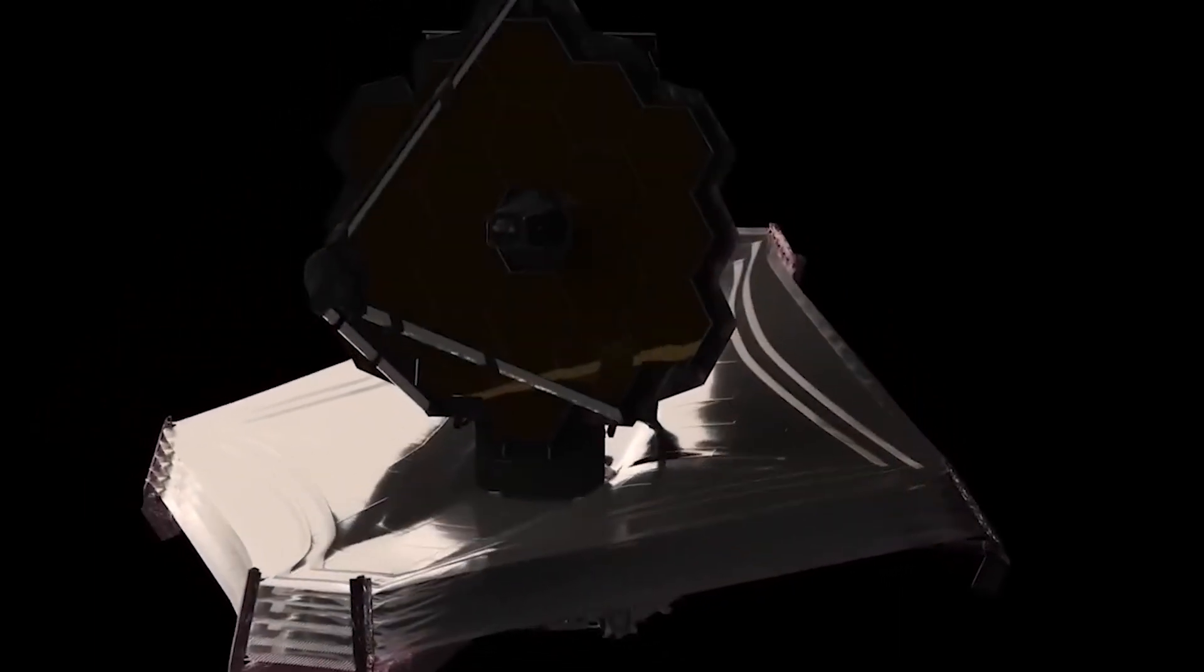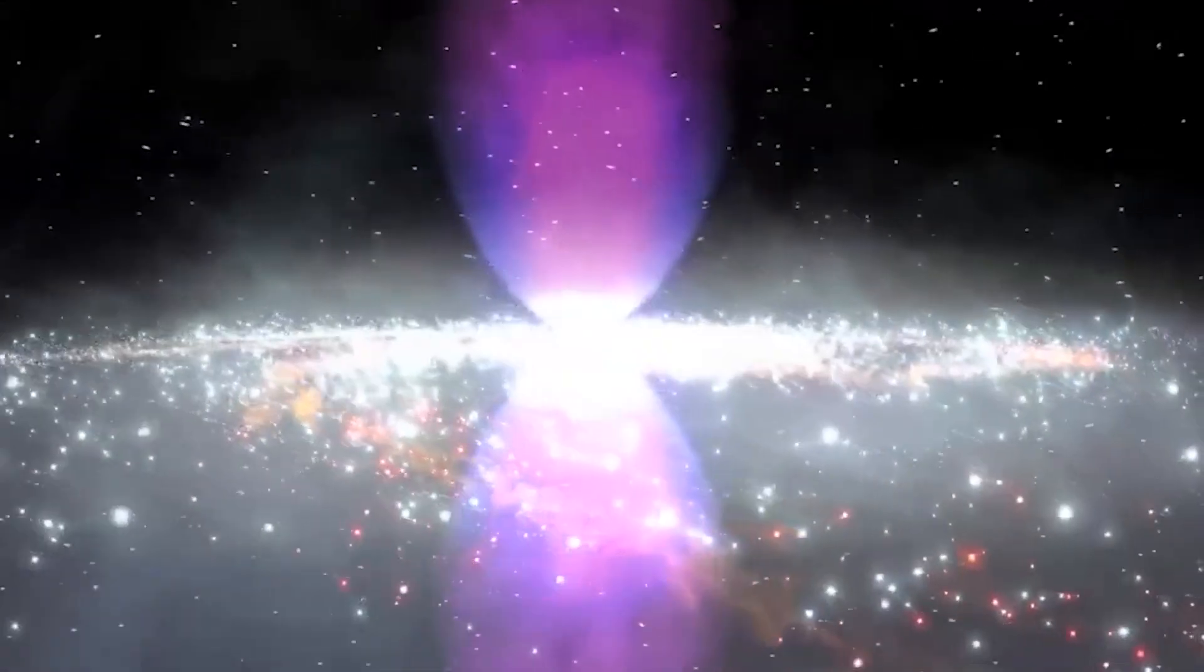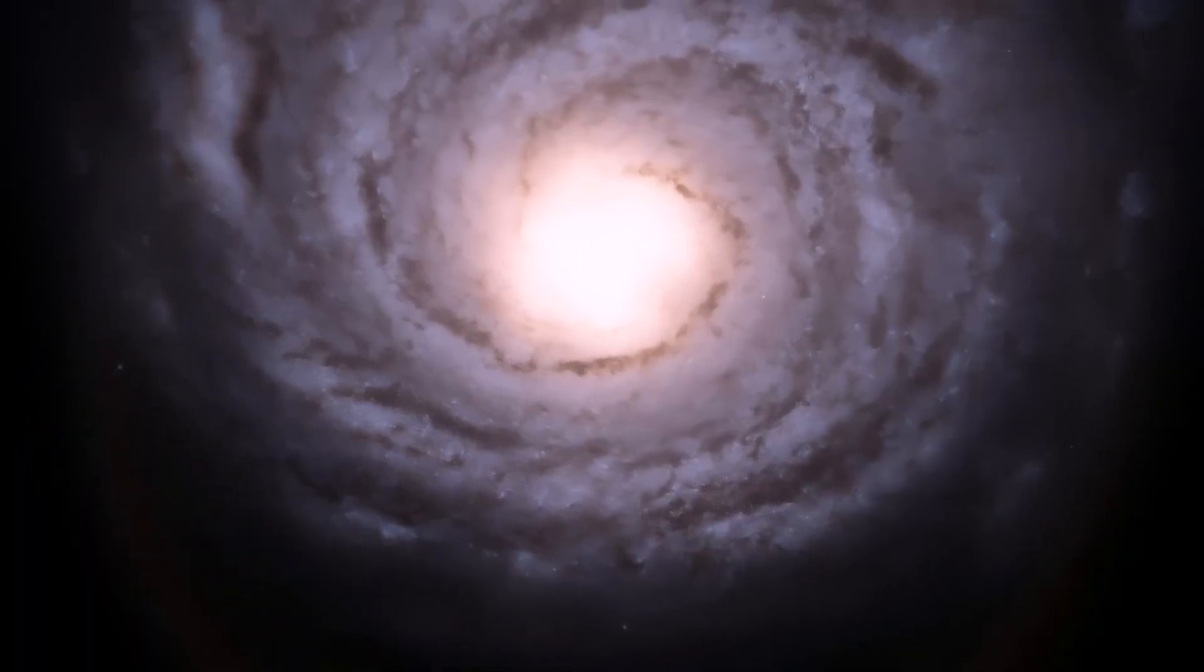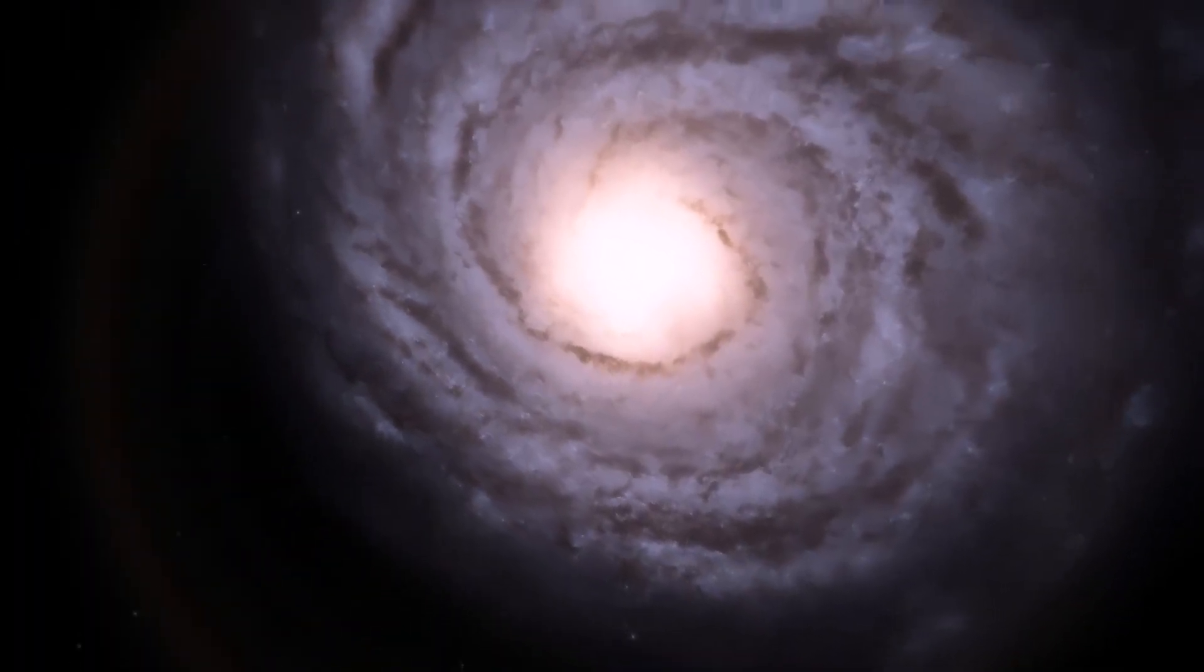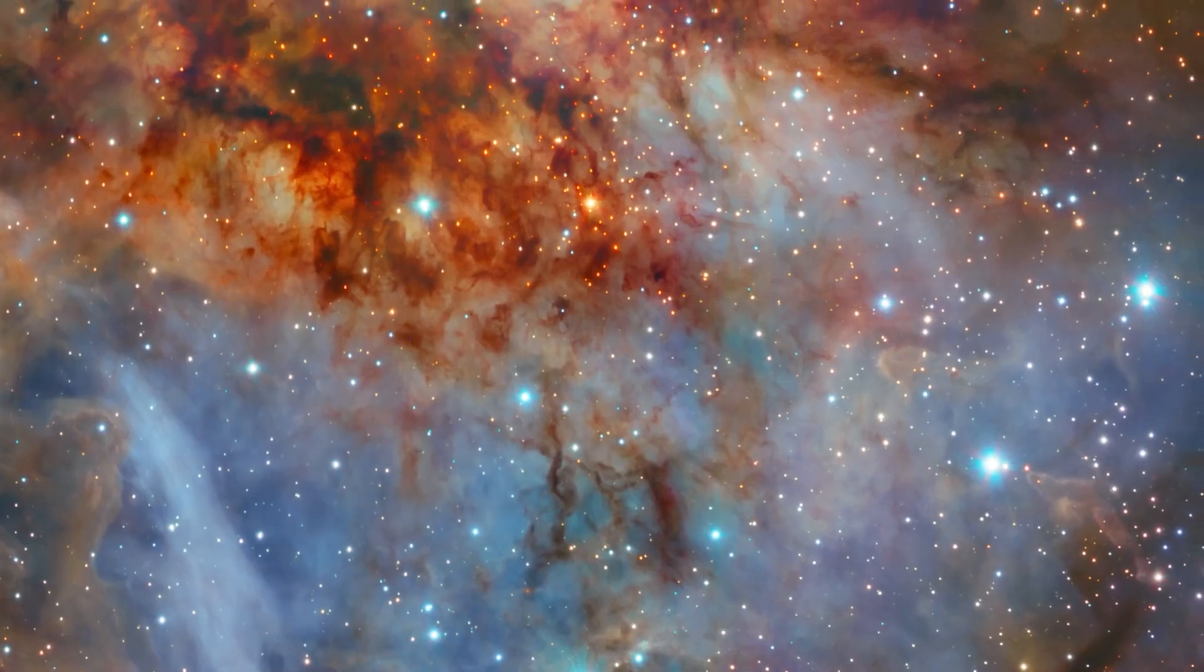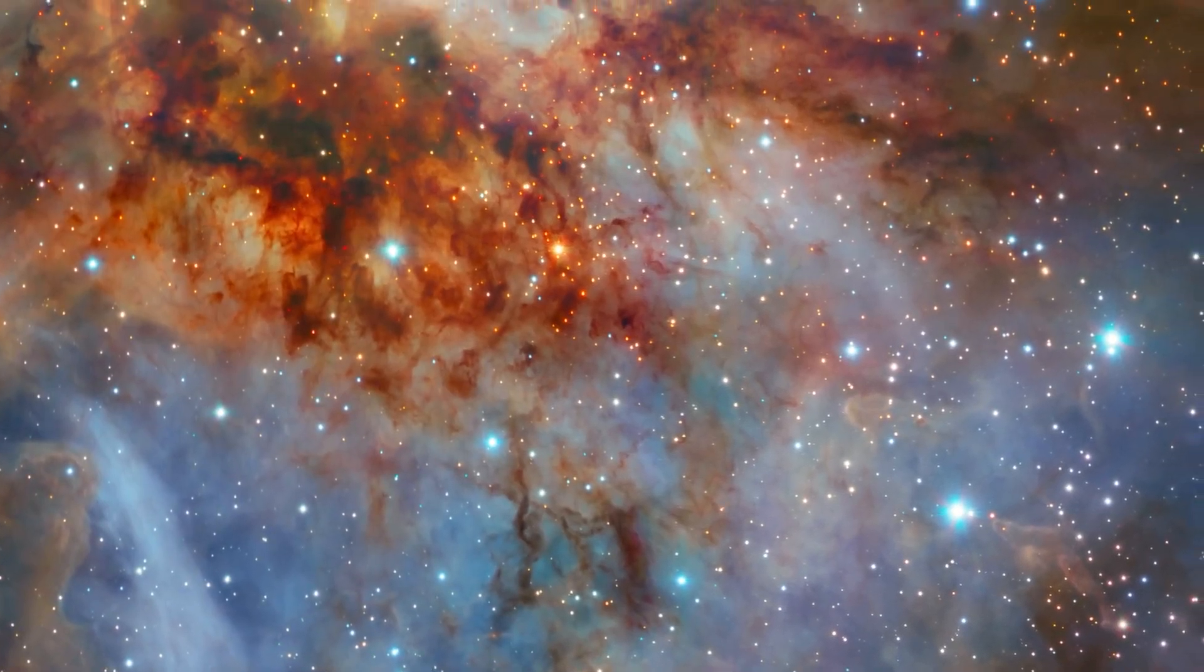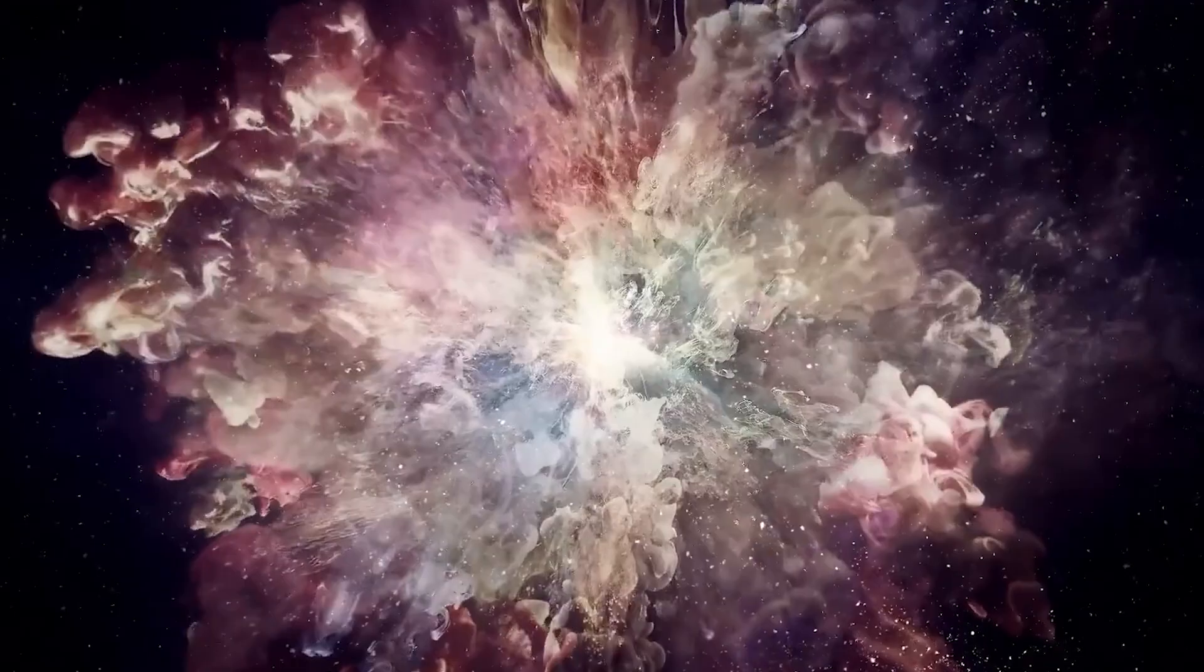The JWST's keen vision has revealed delicate filaments of gas and dust in the grandiose spiral arms that wind outwards from the center of the image. A lack of gas in the nuclear region also allows for a clear view of the nuclear star cluster and the galaxy's center.